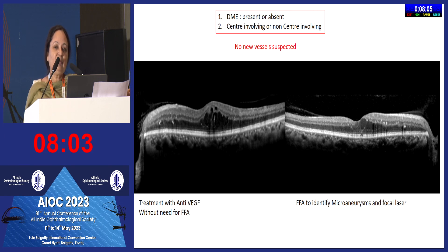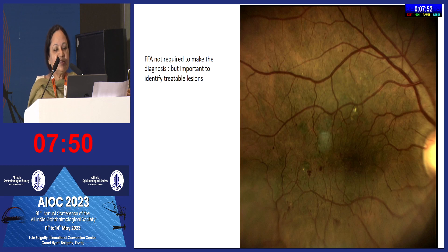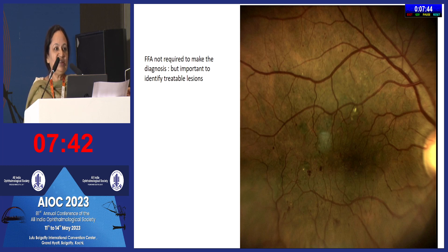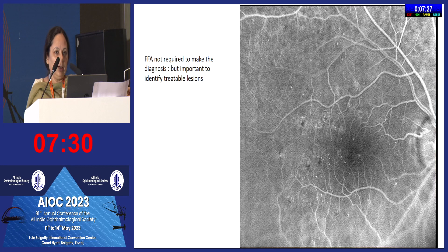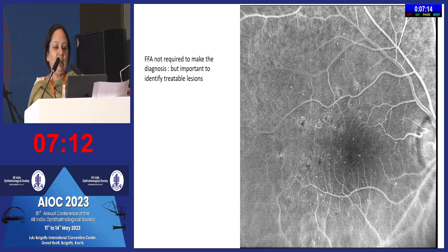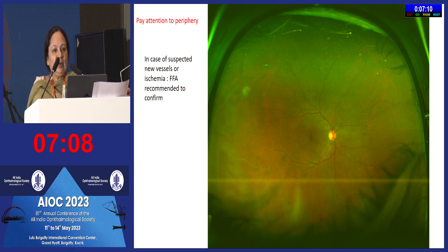For non-center-involving macular edema, check whether there are microaneurysms that are away from the center and amenable to laser treatment. At this point, a fluorescein angiogram is useful to document the leaking microaneurysms precisely — not to diagnose the macular edema, but to identify treatable lesions before you proceed with focal laser photocoagulation.